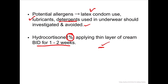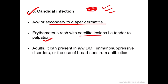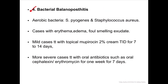For irritant/allergic cases, apply hydrocortisone one percent cream twice daily for one to two weeks. The third type is candidal infection - associated with diaper dermatitis mainly in children, presenting as erythematous rash with satellite lesions, tender to palpation. In adults, it can be associated with diabetes mellitus or immunosuppressive disorders like tuberculosis or HIV. Antifungal agents and powders should be provided.